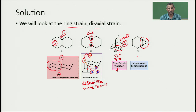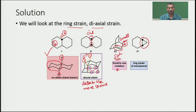The fourth structure contains a three-membered ring, which has a large amount of angular strain. Out of all four structures, only the first structure with the trans fusion has the least strain and is the most stable.